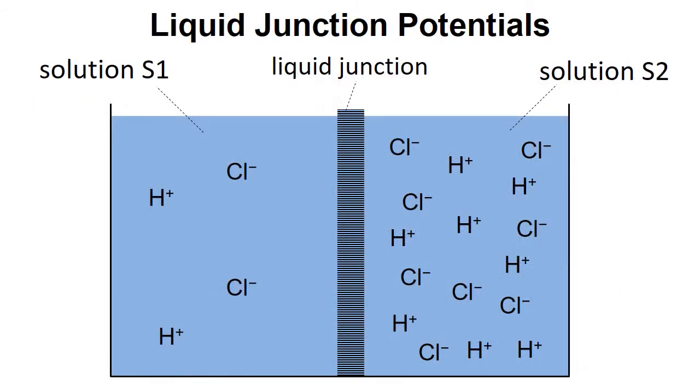In order to think about the origin of a liquid junction potential, we're going to consider the situation where we have a liquid junction between two solutions of HCl. So we've got aqueous chloride ions and hydrogen ions, and in solution one there's a low concentration and in solution two there's a high concentration.